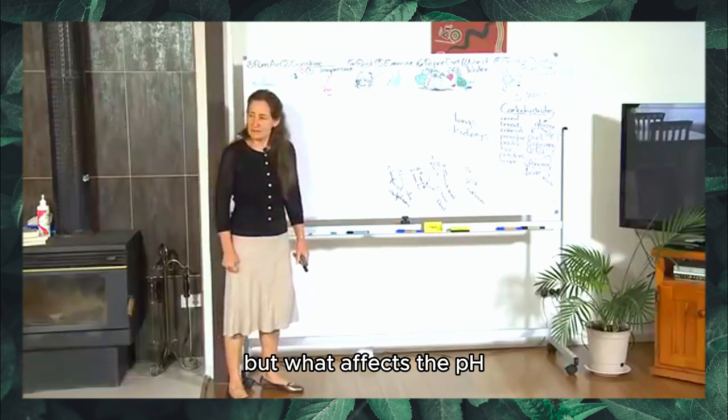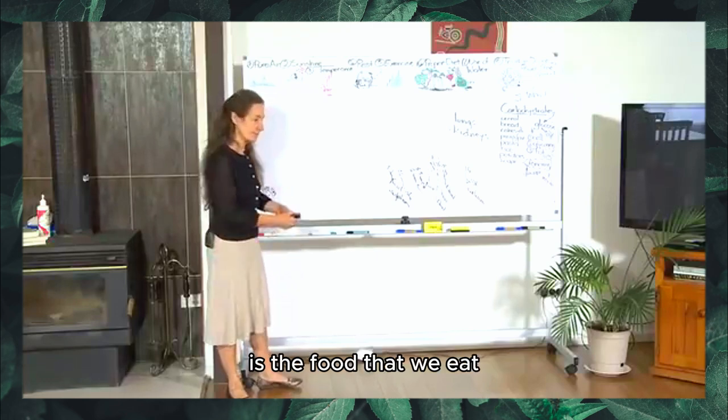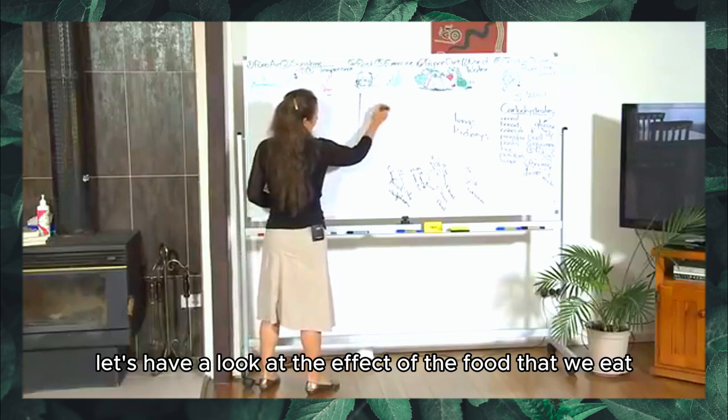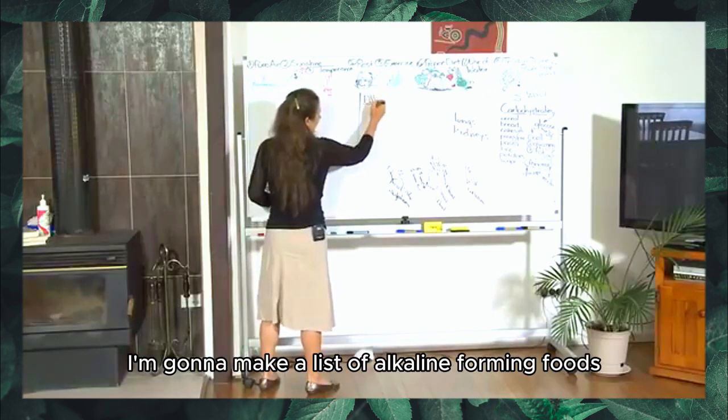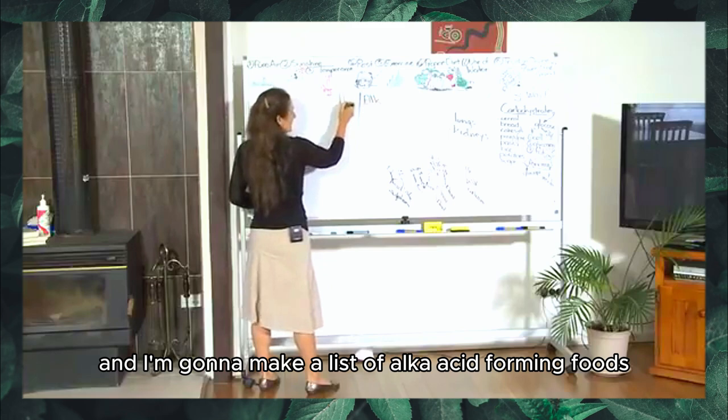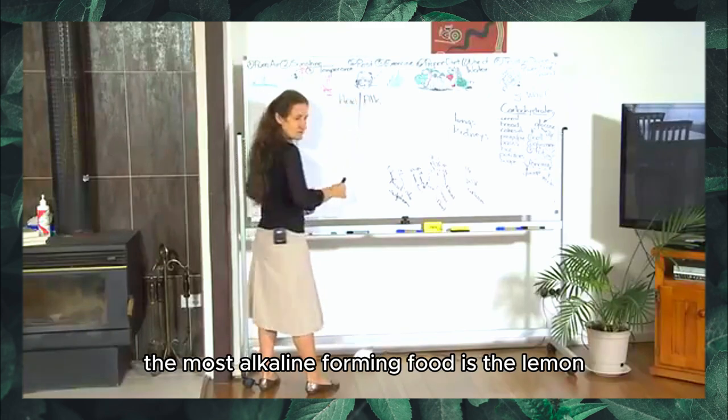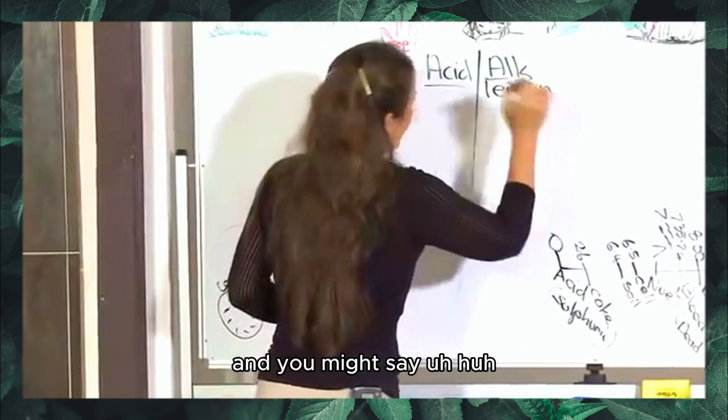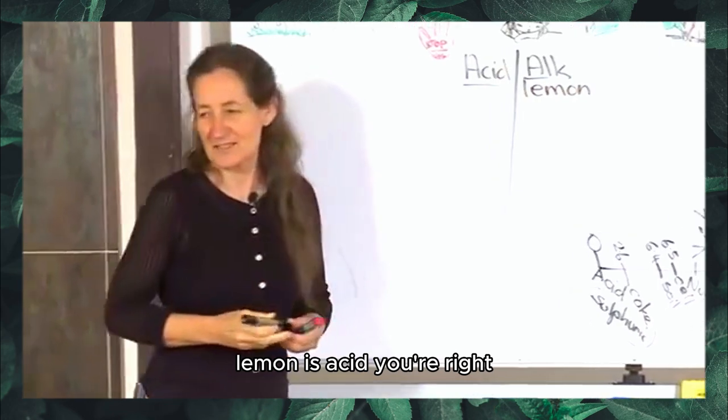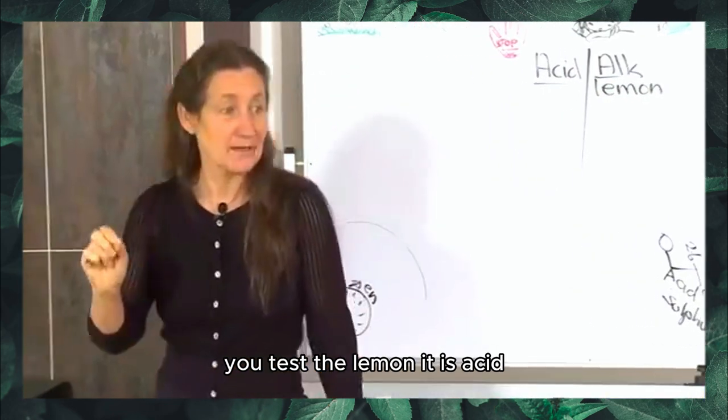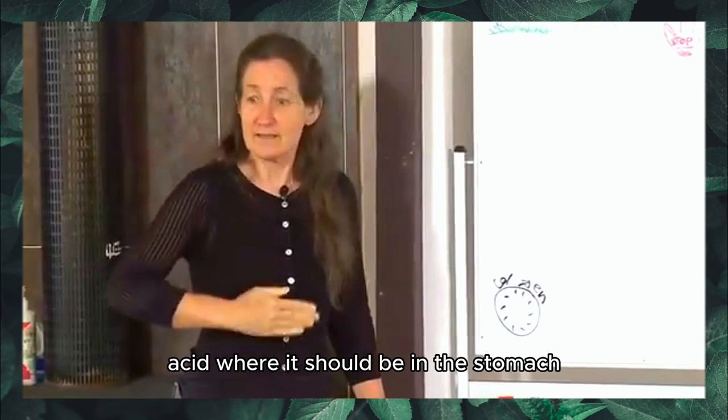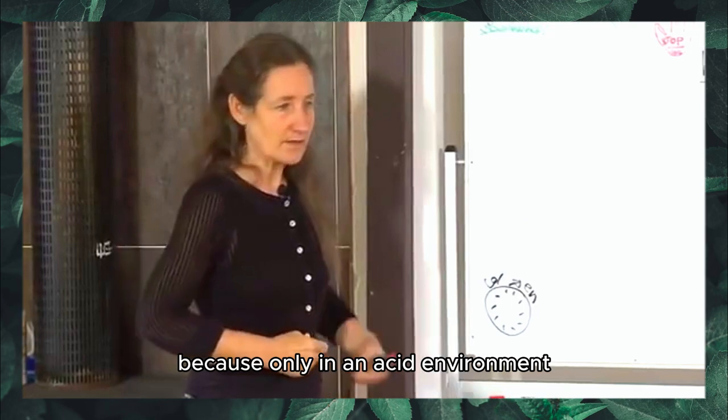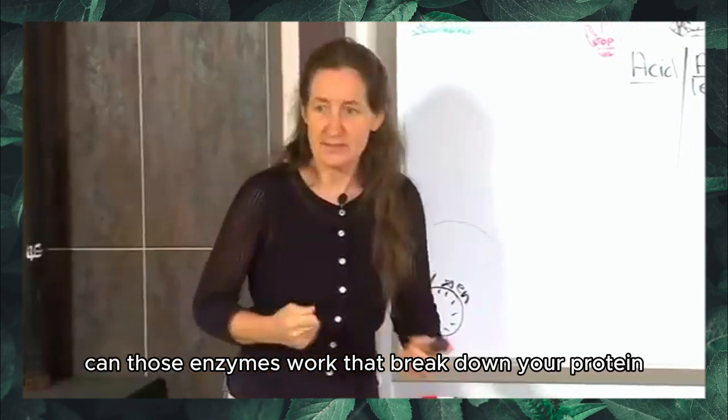What affects the pH probably more than anything else is the food that we eat. I'm going to make a list of alkaline forming foods and a list of acid forming foods. The most alkaline forming food is the lemon. And you might say, aha, lemon is acid. You're right. You test the lemon, it is acid. Acid where it should be, in the stomach where that should be acid.